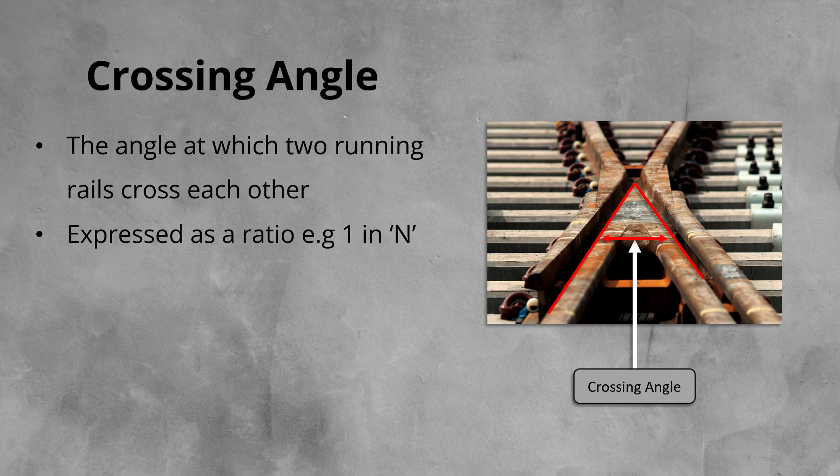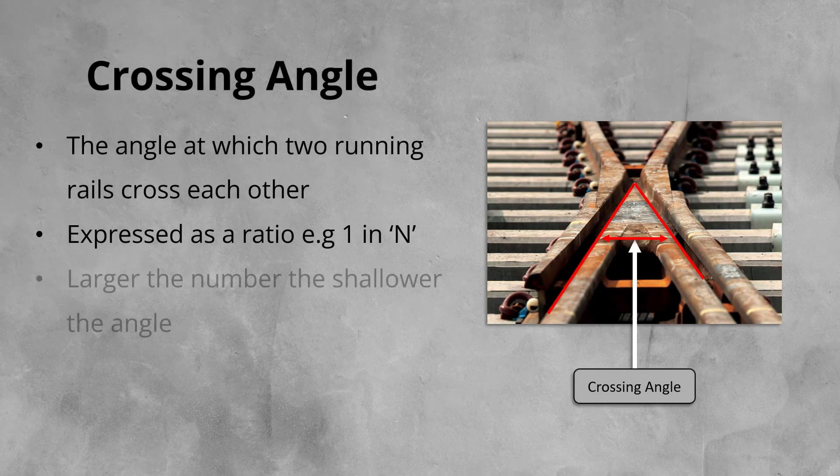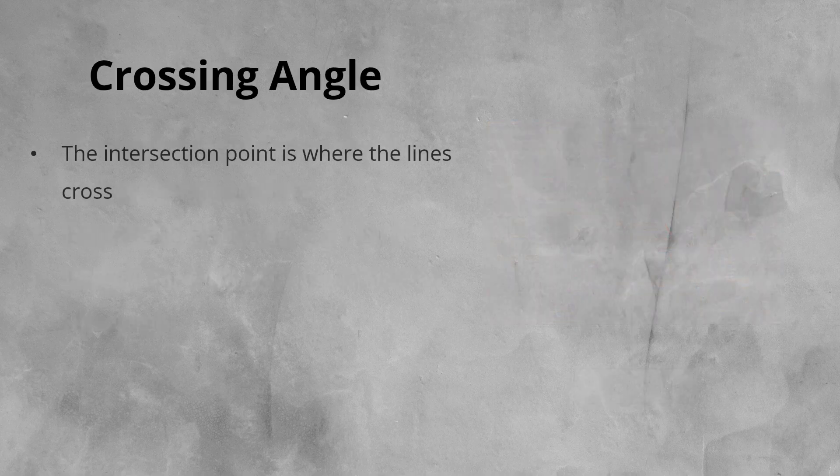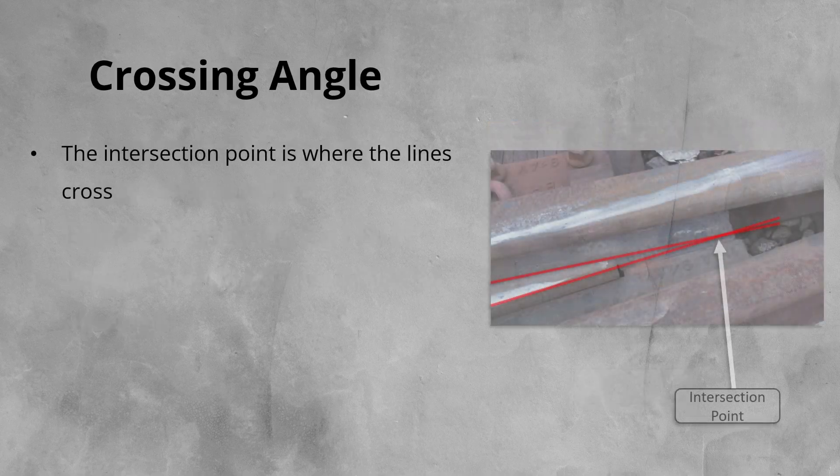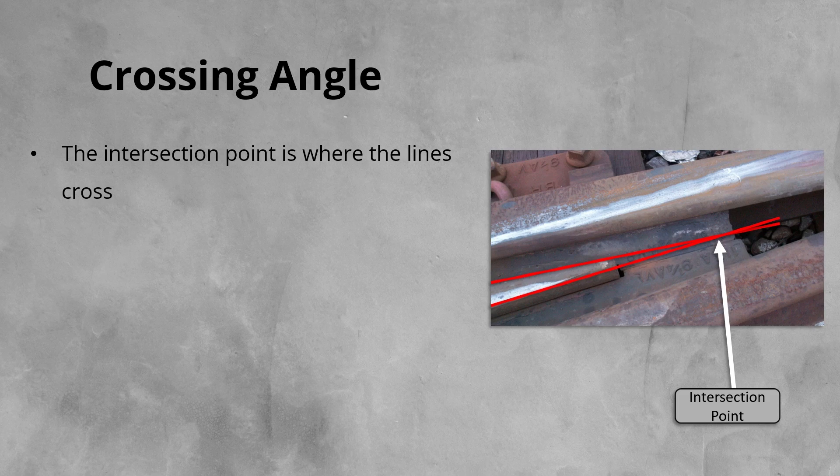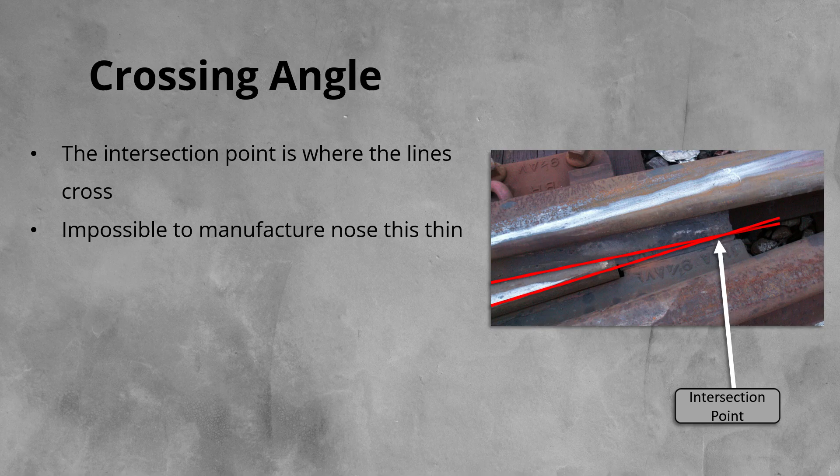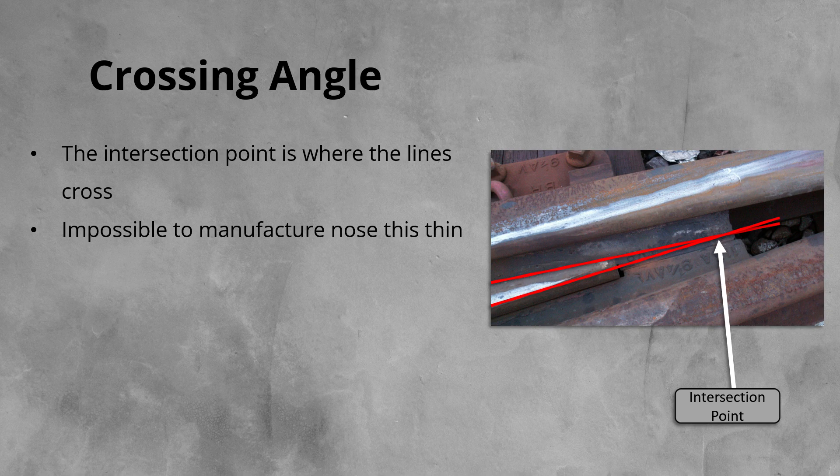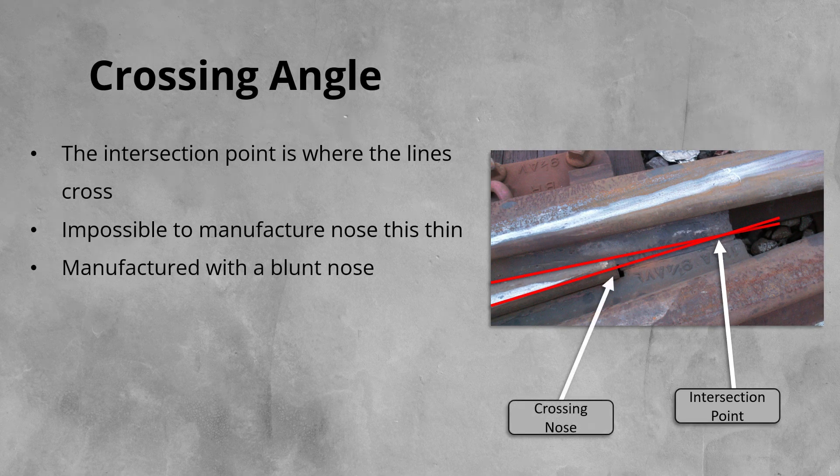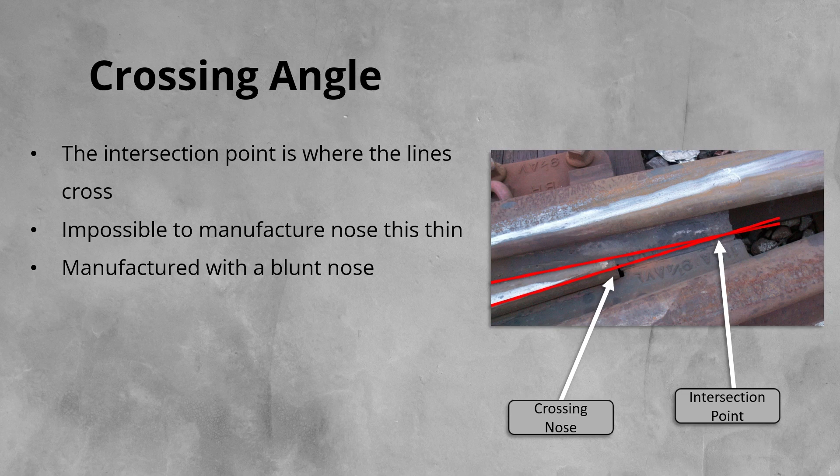The larger the number, the shallower the crossing angle. The intersection point or IP is the point where the lines we place over our running lines cross. However, it would be both impossible to manufacture a crossing with a nose this fine and also impractical, given it would break easily due to being so thin. As you can see from the picture, the crossing nose is blunt. A crossing nose is normally 16 millimeters wide at this point.